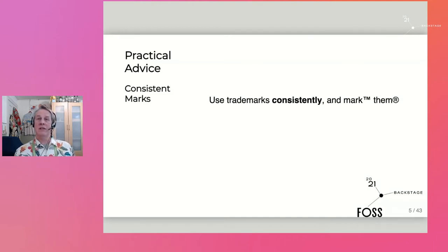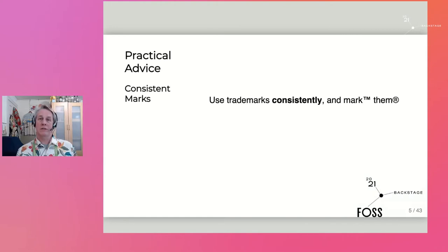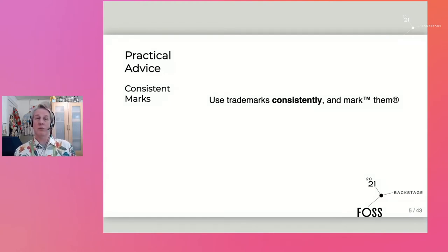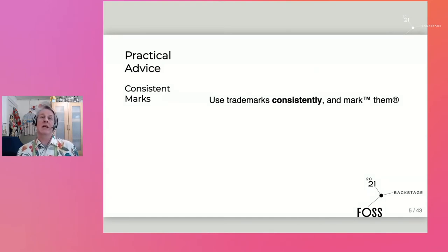Another easy thing here is: treat your trademarks with respect. We have licenses and we have codes of conduct that tell participants how they can use our software, how they can participate in our communities. Do you have a trademark use policy? It's not that hard — there's one online you can simply copy that's written for open source projects. But treating your trademarks as an important part of your project and your community is the first step. Show everybody else that you take it seriously, and that helps other people see it as an important asset to your project and something they should respect.